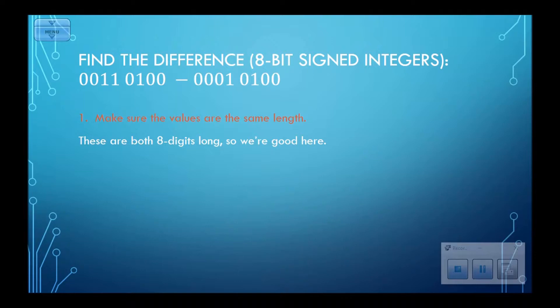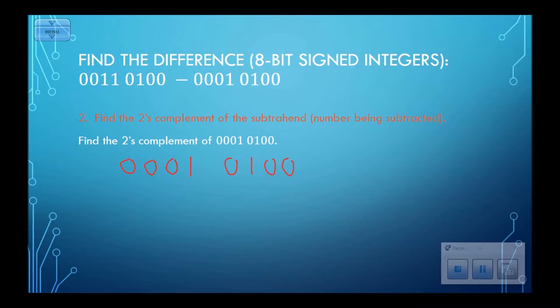Step 2, find the two's complement of the subtrahend. So I have 0001 0100. To find the two's complement, first the one's complement.